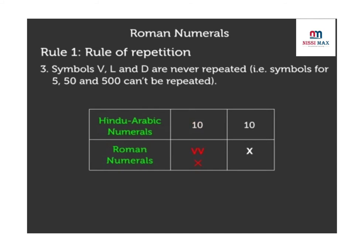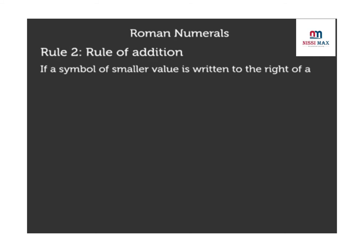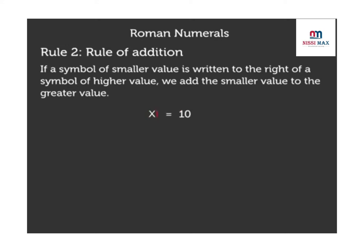Now let us look at the second rule. Rule 2: Rule of addition. If a symbol of smaller value is written to the right of a symbol of higher value, we add the smaller value to the greater value. Let us consider XI. X has a value of 10, I has a value of 1, so the Hindu-Arabic number for this Roman number is 11.